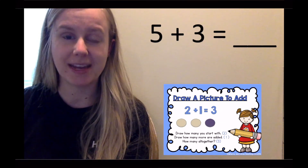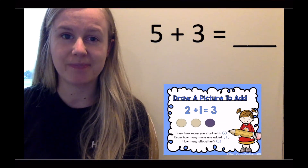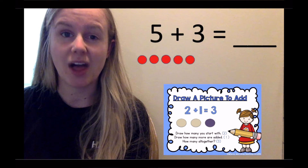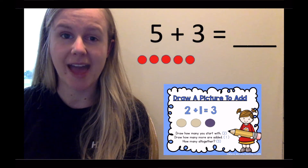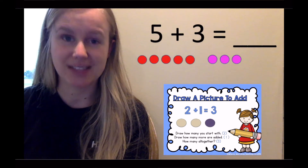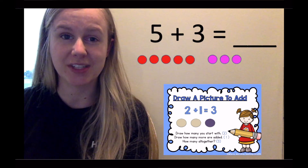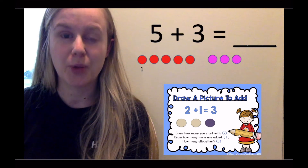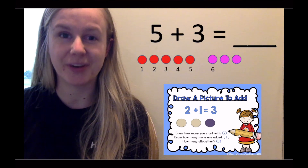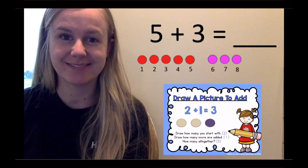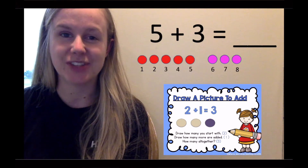Draw how many I start with — that's five. Draw how many more are added — that's three. How many all together? One, two, three, four, five, six, seven, eight. The answer is eight.